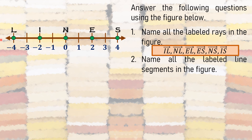Question 2: Name all the labeled line segments in the figure. A line segment has no arrows on either side — it has two endpoints. The line segments are: Segment IN, Segment IE, and Segment NE. These can also be written in reverse: Segment NI, Segment EI, Segment EN. Points L and S are not included because they have arrows and belong to rays, not line segments.